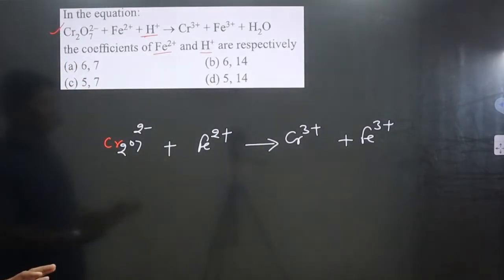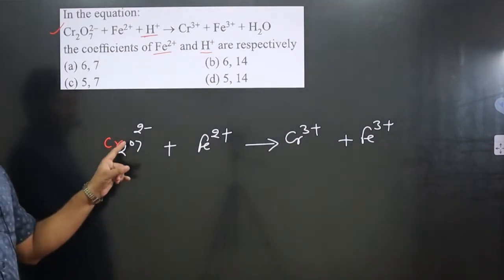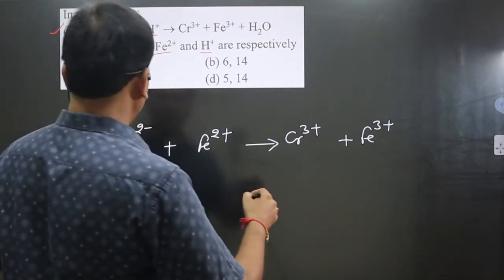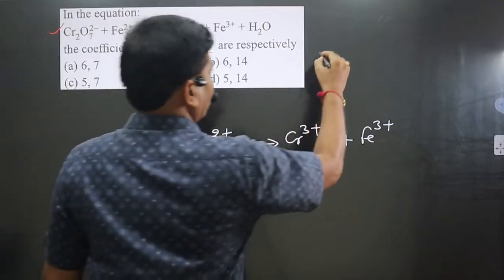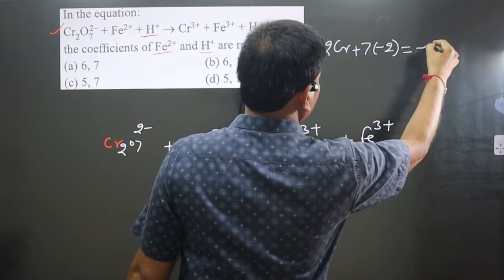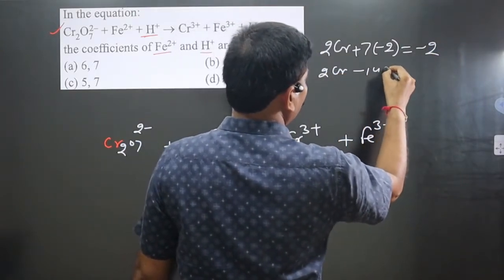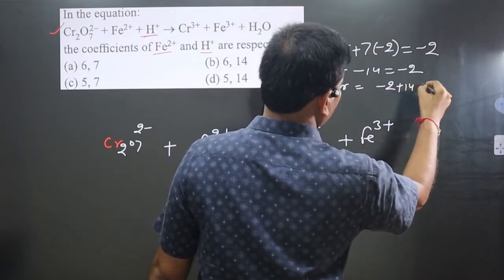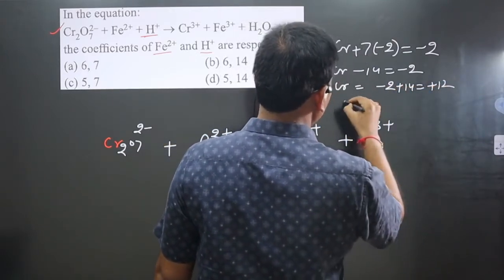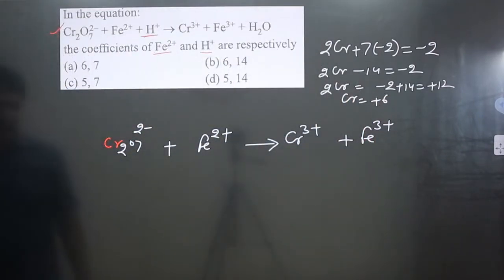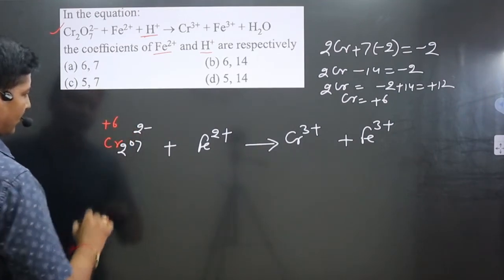We can balance this equation. First, we write down the oxidation numbers of elements on both sides. There are 7 oxygens, each with minus 2. We have 2 Cr and 7 oxygens, each oxygen is minus 2, and the overall charge is minus 2. So 2Cr minus 14 equals minus 2, giving 2Cr equals plus 12, and therefore 1 Cr equals plus 6 oxidation number.